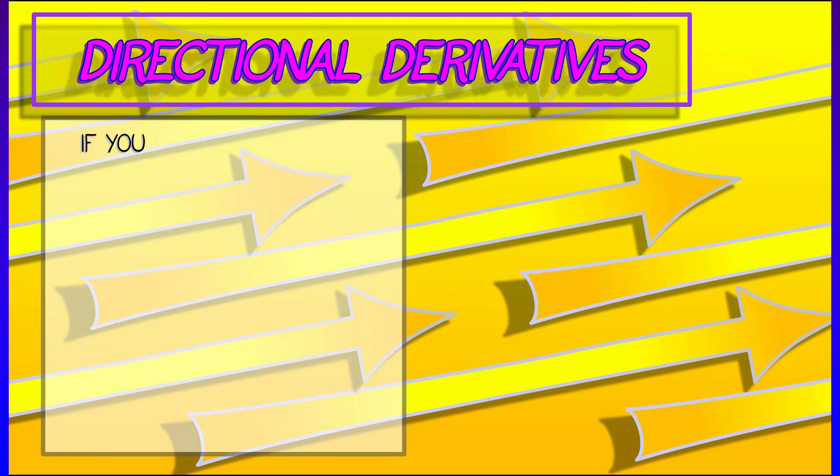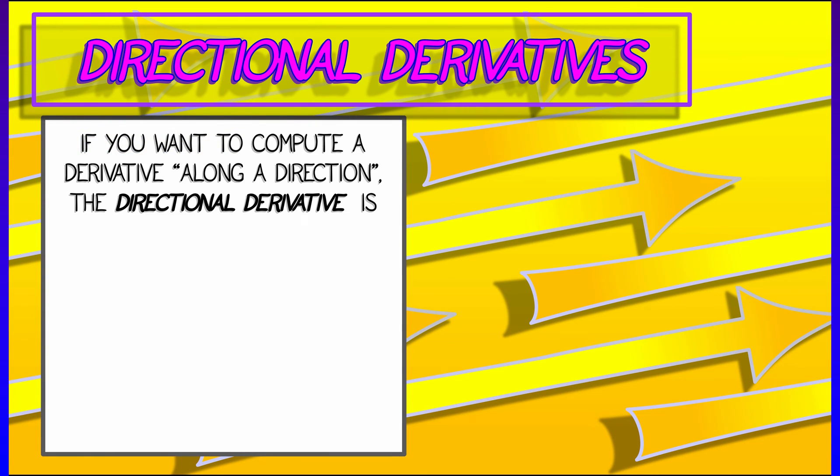If you've got a real-valued function and you want to compute a derivative along a particular direction, what do you do?